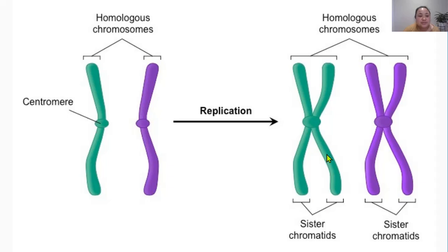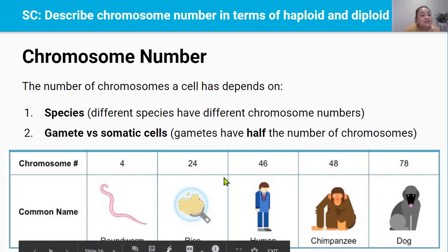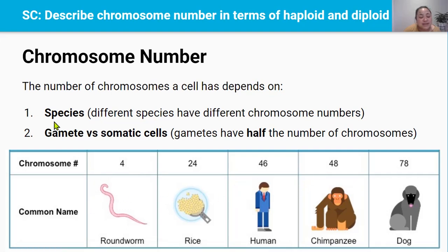We've talked about chromosome structure, now let's talk about chromosome number. The number of chromosomes a cell has depends on two things: what species the cell comes from, and whether it's a somatic cell — a normal body cell — or a gamete, a sex cell. This is because different species have different numbers of chromosomes, as shown in this table. And gametes always have half the number of chromosomes compared to somatic cells.